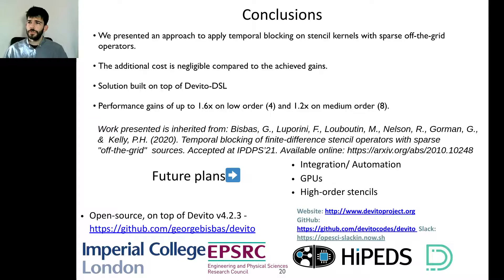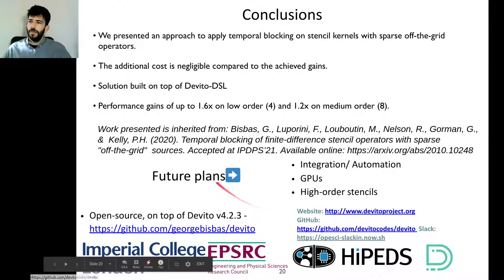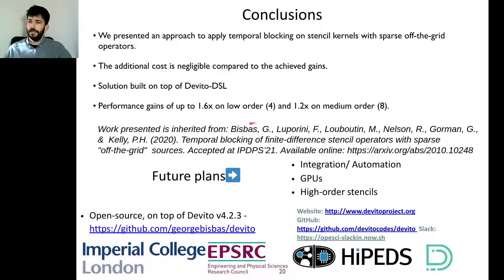These are our conclusions. We presented an approach to apply temporal blocking on a class of stencil kernels with sparse off-the-grid operators. All this had a negligible cost. It was a solution built on top of the Devito domain-specific language. We had satisfactory performance gains and this work is inherited from this paper which you can find online. Our future plans include integration automation and extension to graphical processing units and to find a solution to improve high-order stencils. Thank you very much and I would love to hear your questions.